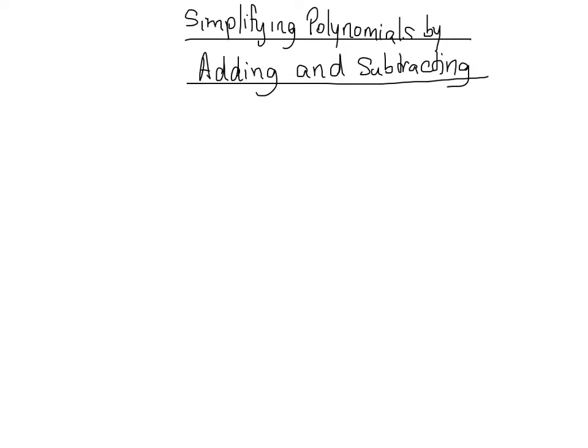In this video, we're going to start simplifying polynomials by adding and subtracting terms. Before we do though, it's important that we know what a polynomial is. A polynomial is just something that can have multiple terms, and the terms could be constants, they could have x's, it could have multiple x's with different powers. It's just an expression that's made up of terms. That's very vague, but we shall see more on polynomials right now.